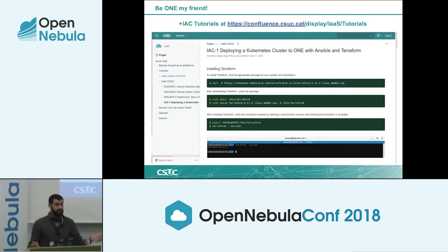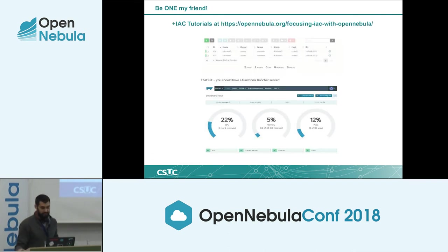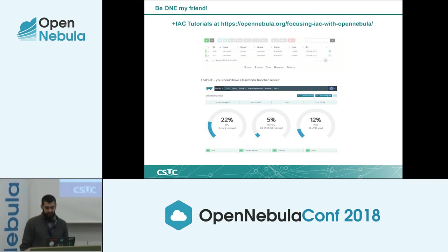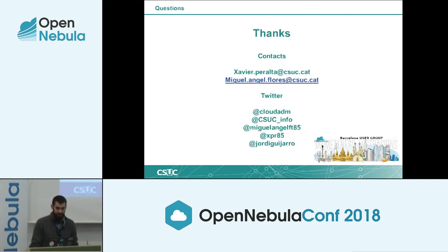In addition to this simple demo, we have done some basic tutorials about deploying a Kubernetes cluster with Terraform and Ansible, which you can check at this URL. We also have another tutorial published on the OpenNebula blog — the same concept but using a Rancher cluster instead of Kubernetes. Feel free to check them out and if you have feedback, we appreciate it.